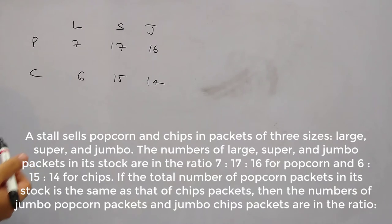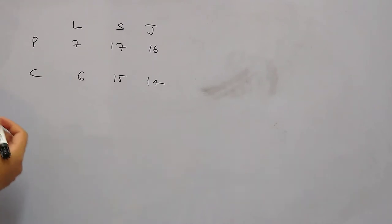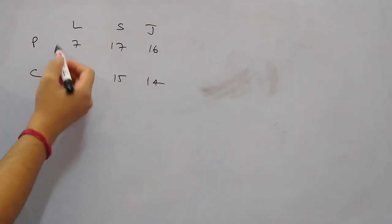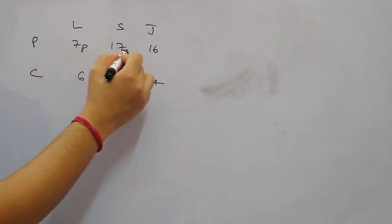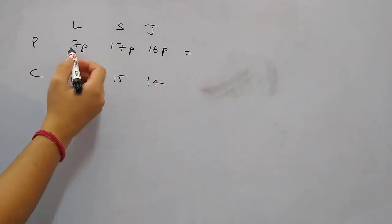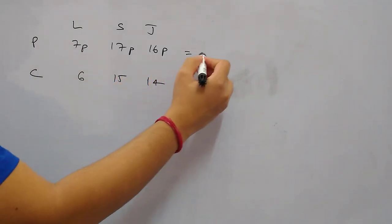So again, a very easy question in the CAT. Let's see the multiplication factor. Let's say for popcorn the large size is 7p, it's 17p and 16p. Then the total number of popcorn packets that we have is 7, 17, 16, it's 40p.